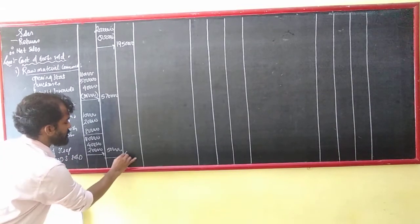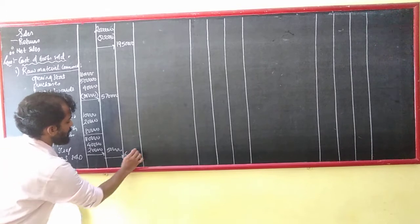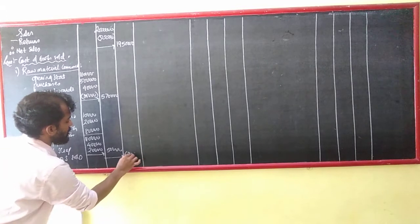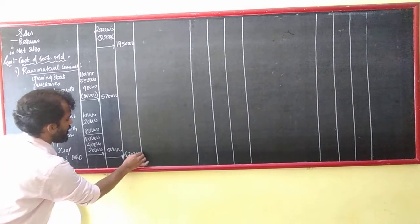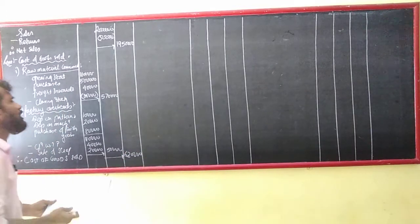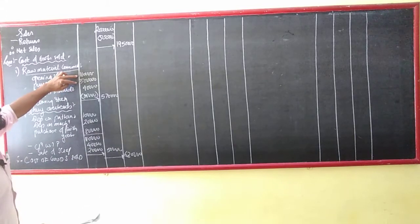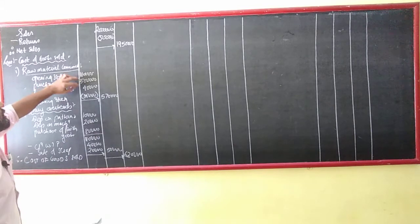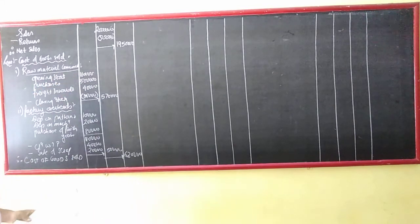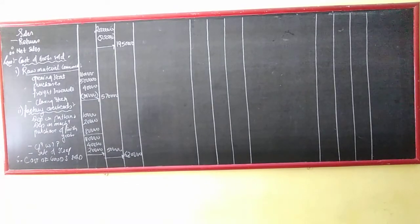16,000 and 20,000, and then 40,000. And that is why we will move to the next step and calculate further.